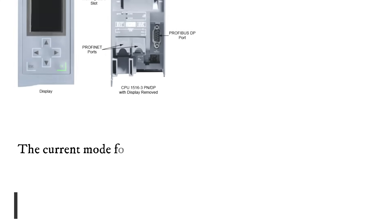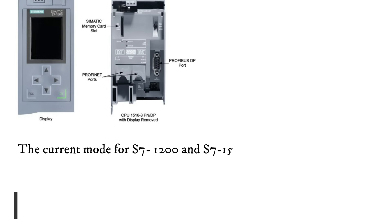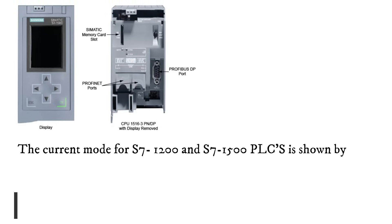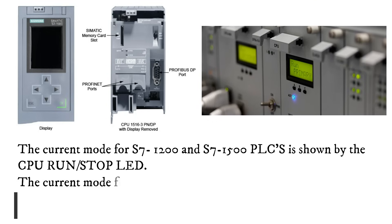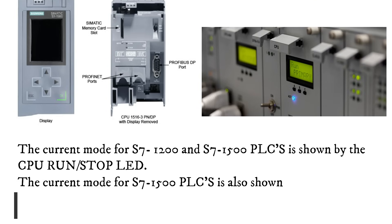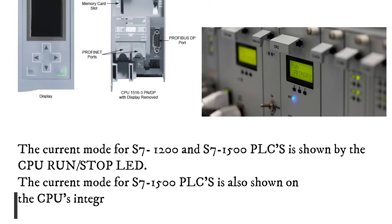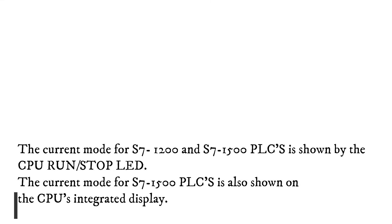The current mode for S7-1200 and S7-1500 PLCs is shown by the CPU run/stop LED. The current mode for S7-1500 PLCs is also shown on the CPU's integrated display.